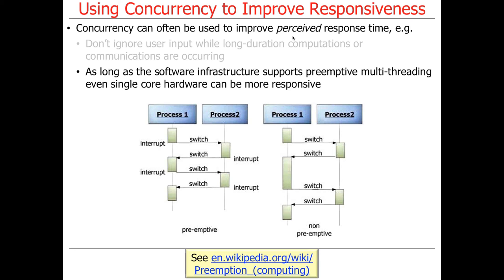Student question: Is the preemptive switching based on time? Yes. By default, every time-sharing thread gets a chance to run for something like 100 microseconds. Every 100 microseconds an interrupt occurs, the OS takes control from the running thread, suspends it, and starts another — assuming only one core. However, if the running thread does a blocking operation like a blocking read or write, it will context-switch more rapidly, since there's no sense keeping the CPU idle while that thread is blocking. So if something blocks it switches right away; otherwise it's automatically preempted every 100 microseconds or so.